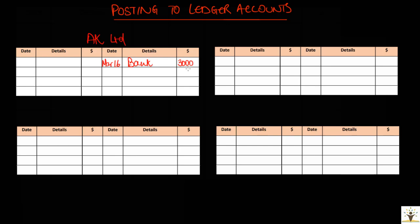On March 22, when the check got dishonored, entry was made on the credit side of the cashbook in the bank column. So the second effect will be recorded on the debit side of AK Limited. Next, we shall prepare the NEMA account. On March 23, goods were purchased on credit from NEMA. Though this was not recorded in the cash book, it would have been recorded in the purchase day book and hence posted to NEMA account. On March 25, a check was paid to NEMA after deducting a cash discount of $50. So in the NEMA account on the debit side: bank $950, and discount received $50.